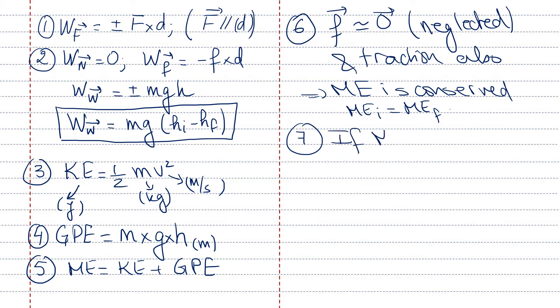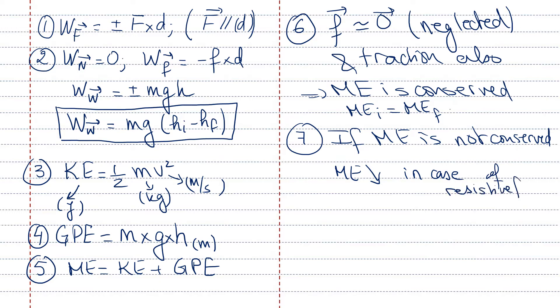Seventh, if mechanical energy is not conserved, it is either lost or gained. Mechanical energy is lost in case of resistive forces or resistive work, and mechanical energy increases in case of motive forces such as traction. The change in mechanical energy is converted into — or produced by — the work of these forces, either resistive or motive. This summarizes all the rules we're going to use. Let's start with application one.